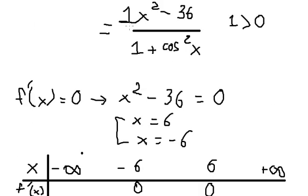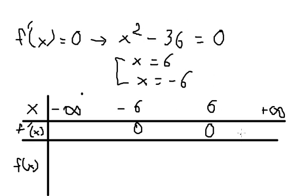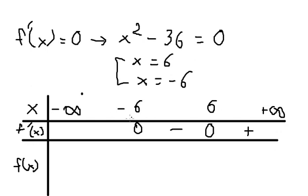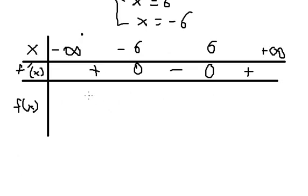So that means we have zero at both critical points. Because the coefficient of s squared is positive, from the right of positive six the sign is positive. Between negative six and positive six the sign is negative. And to the left of negative six the sign is positive.